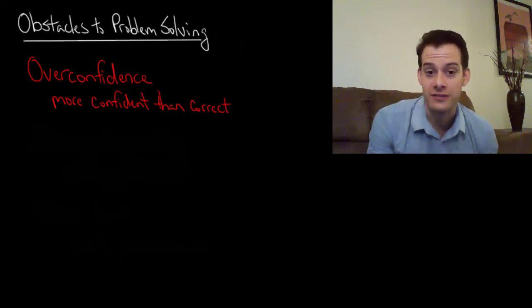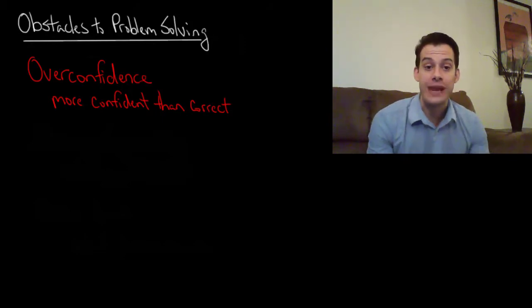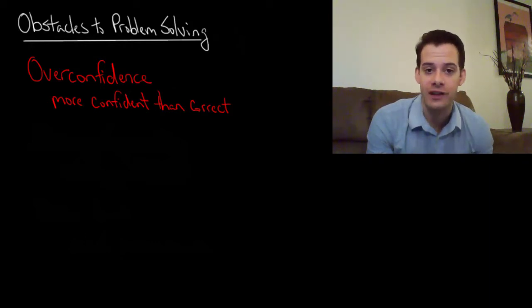And of course this applies to more than just spelling. If we think we already have the solution, if we think we know the answer, then we don't investigate further, we don't consider possible alternatives and as a result we continue making the error. So this can prevent us from getting to the actual correct solution to a problem because we think we already have the correct solution and therefore we're done working on the problem.